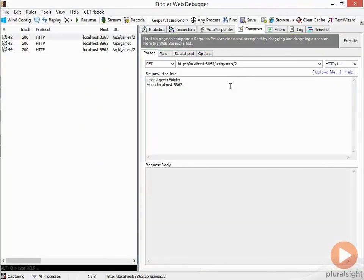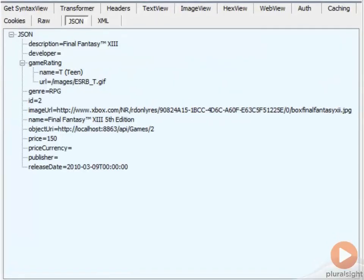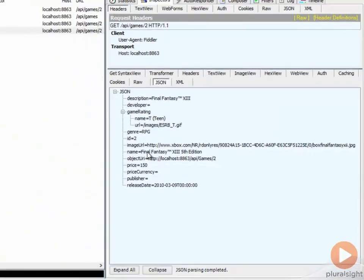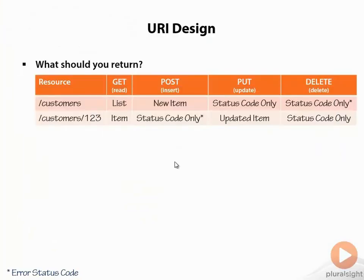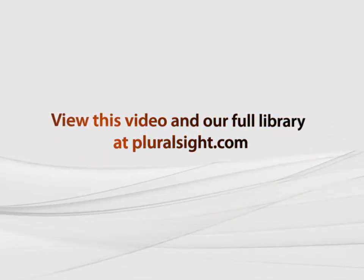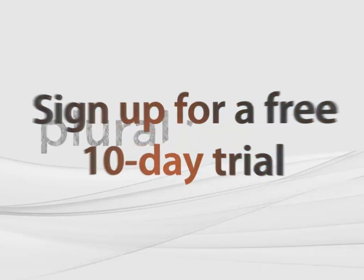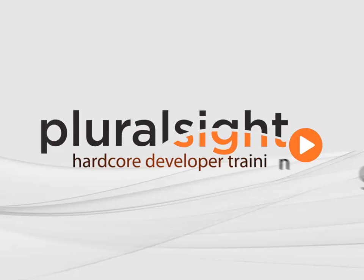If we drag this over to composer — which copies the request so we can re-execute it — we can see now that we've got 5th edition, because that is now what is being stored on the server. Simply by changing the type of verb you're using, those same endpoints can be used to do different sorts of operations. In this way, the URIs themselves remain fairly simple and easy for users of your API, while maintaining a lot of this different behavior. Thank you, everybody.